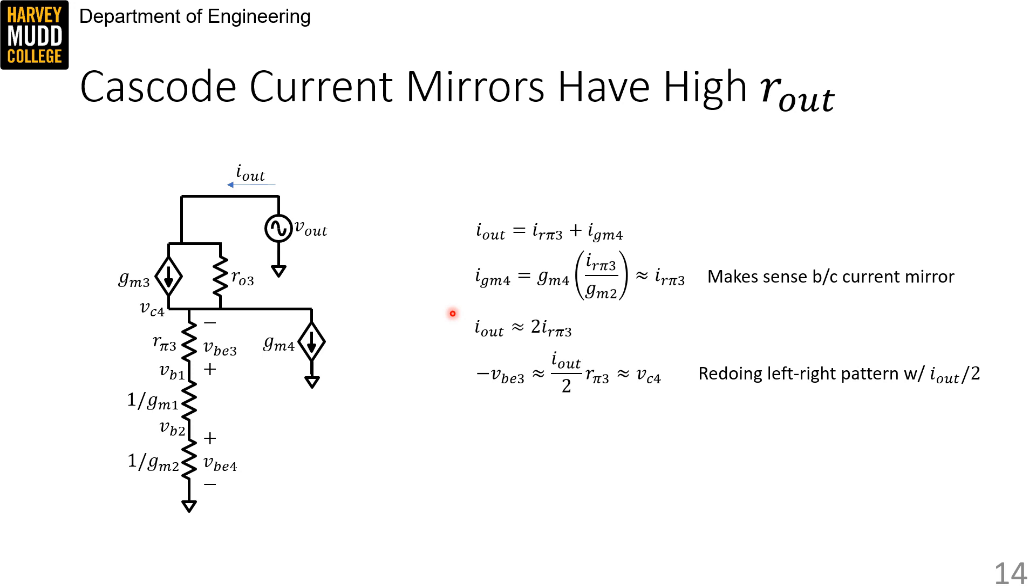I've included this line to indicate a simplifying assumption I'm making for the rest of the analysis, which is that RPi3 is bigger than 1 over GM1 plus 1 over GM2. So we're saying that VC4 is made up almost entirely of VBE3 here, and we're just ignoring the voltage across 1 over GM1 and 1 over GM2, saying that they're small in series with RPi3. And we know that I out over 2 flows in RPi3, so we can actually calculate VBE3 directly with that simplifying assumption.